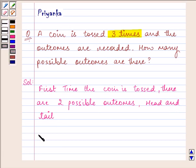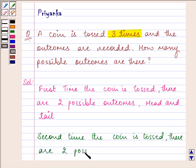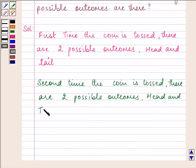Now the second time the coin is tossed, then also there are two possible outcomes once again, that is head and tail.